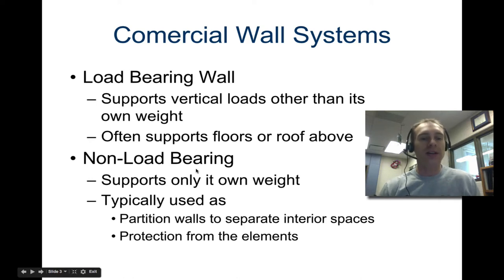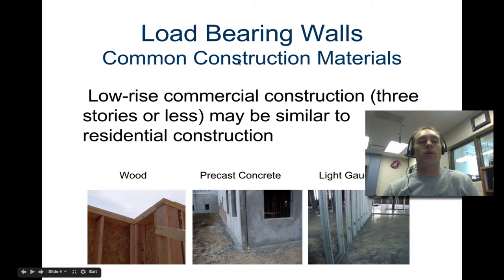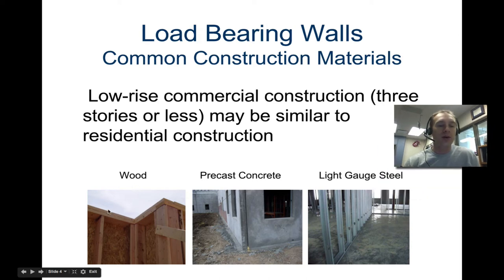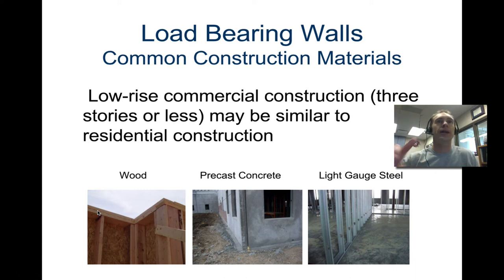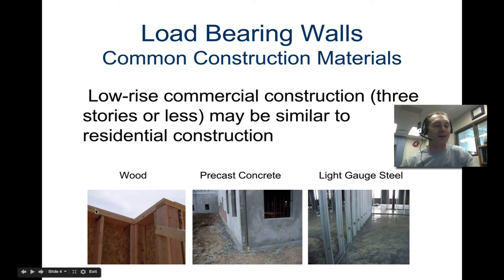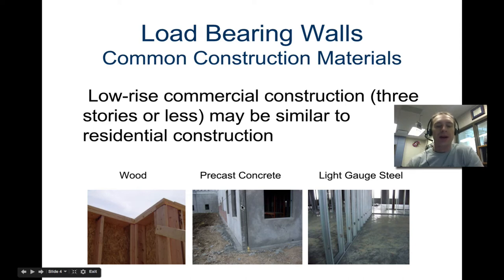Not always though. Let's get into some examples of load-bearing walls. You can have a wood load-bearing wall, which is very common in residential. For low-rise commercial construction — there's a building being built on Highway 287, an assisted care living facility — it's built out of all wood, so they have load-bearing walls and it's a commercial type building. There's also precast concrete and light gauge steel. So those are three different options for load-bearing walls: wood, precast concrete, and light gauge steel.